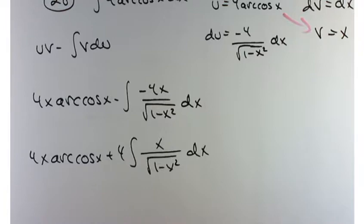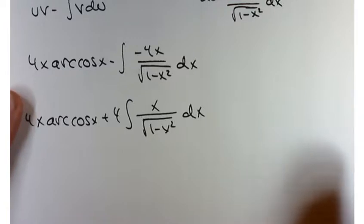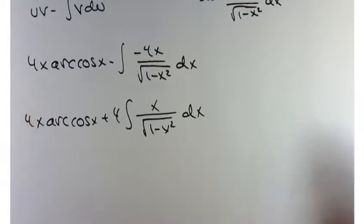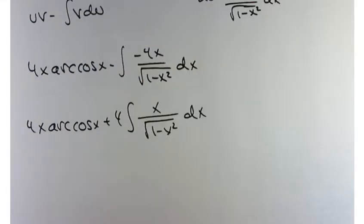So U times V, I'll write that as 4 times X times arc cosine of X minus the integral of V DU. So that's X times minus 4 DX over square root of 1 minus X squared. So minus 4X over square root of 1 minus X squared DX. Let's clean this up just a little bit.